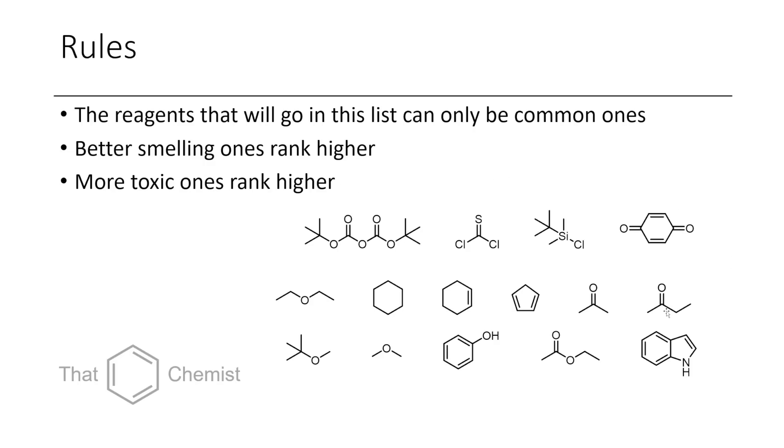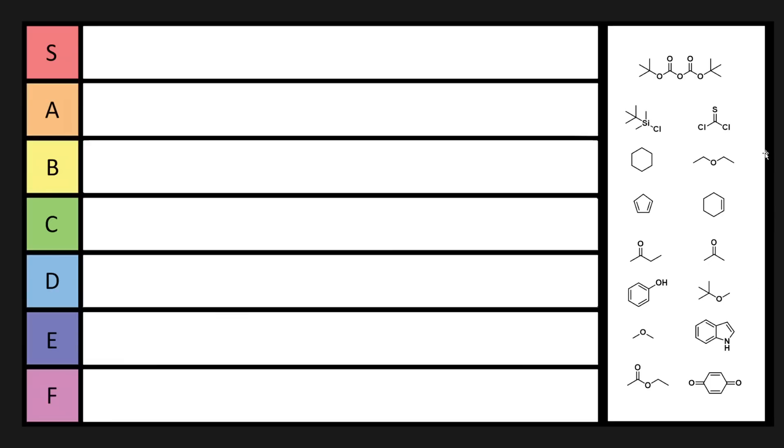So if we have something like ethyl acetate, ethyl acetate is not that toxic, but it does smell pretty good. But this would never be like an S or an A tier chemical because it's just not that toxic. So let's get to the list. Here we have a whole bank of different chemicals with a bunch of different properties. Some of them are protecting groups like this TBS chloride. Some of them are solvents like diethyl ether.